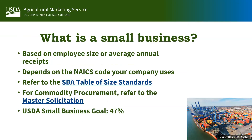So what defines a small business? It depends on a number of factors, starting with the NAICS code. The NAICS code you use will have a size standard — either an employee size or a dollar amount of average annual receipts. You can review the SBA table of size standards, which lists all NAICS codes and their size standards. Commodity procurement has an easier way: the specific NAICS codes used can be found on our master solicitation, so please use those specific codes when registering in SAM.